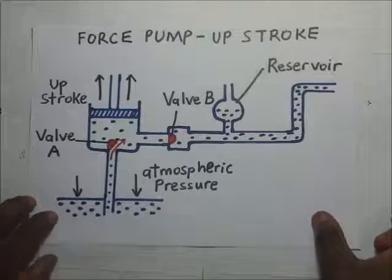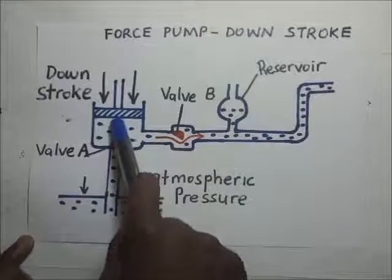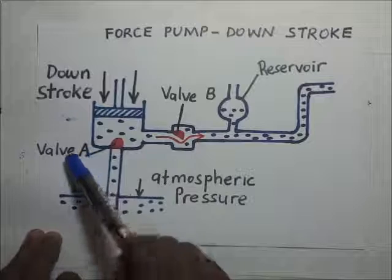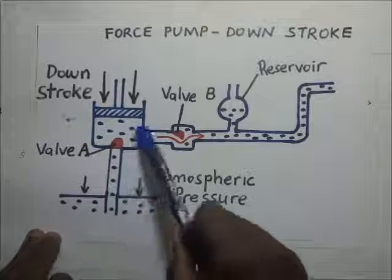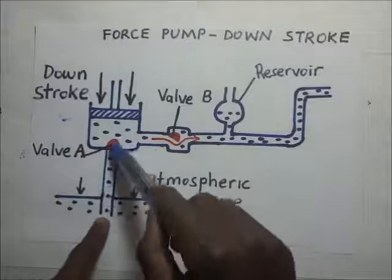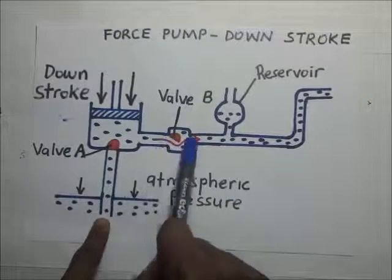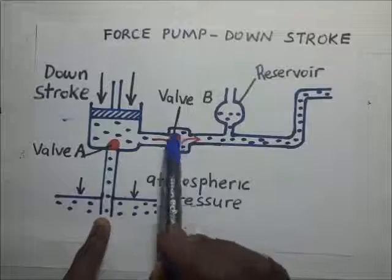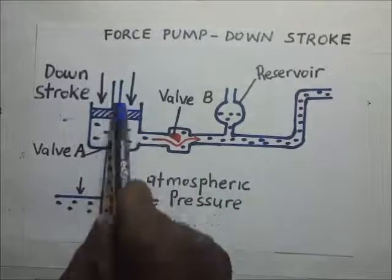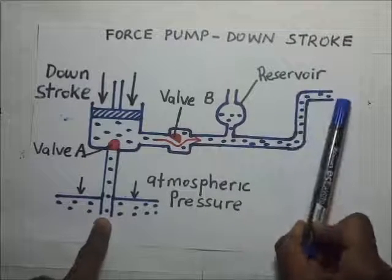Now what about the downstroke? During the downstroke of a force pump, the force being exerted by this piston causes the pressure on top of the valve to be higher than the atmospheric pressure below. So as a result, valve A will be closed. And when valve A is closed, this pressure is going to cause valve B to open. When valve B opens as a result of the pressure caused by the downstroke, you have water coming out of here.